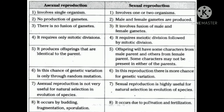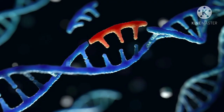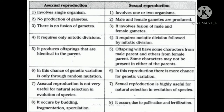In Asexual Reproduction, the chance of genetic variation is only through random mutation. Mutation is a sudden heritable change in DNA. In our body, genes can undergo sudden changes due to exposure to harmful chemicals or harmful radiation such as cosmic rays. So in Asexual Reproduction, new characters appear only because of mutation. Asexual Reproduction is not useful for the evolution of species.